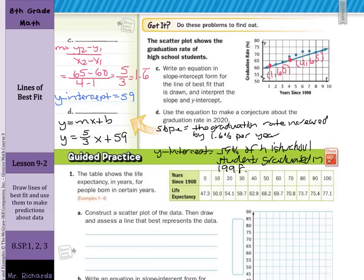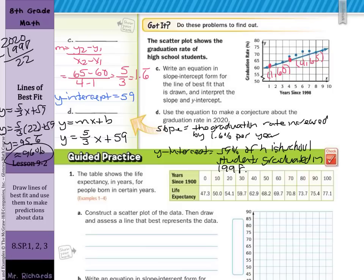In part c, to make a conjecture about the graduation rate in 2020, 2020 is 22 years since 1998, because you can take 2020 minus 1998 and get 22 years. And so if you were to take our equation, y equals 5 thirds x plus 59, and substitute in our 22, and simplify and solve. y would equal 96, or 95.6, which means that about 96% of high school students would be graduating by 2020.